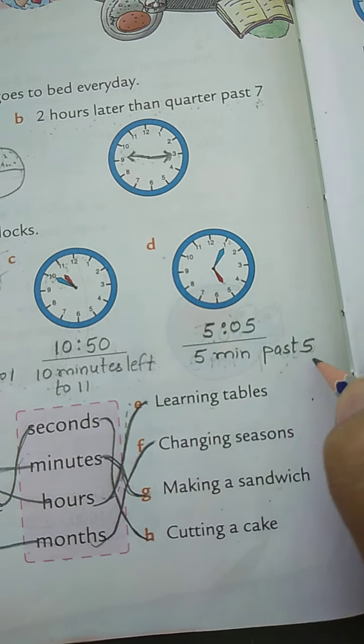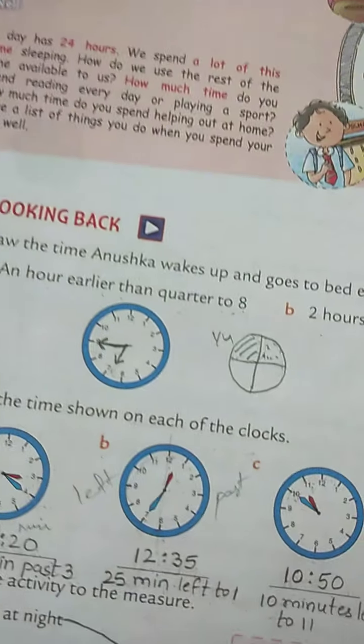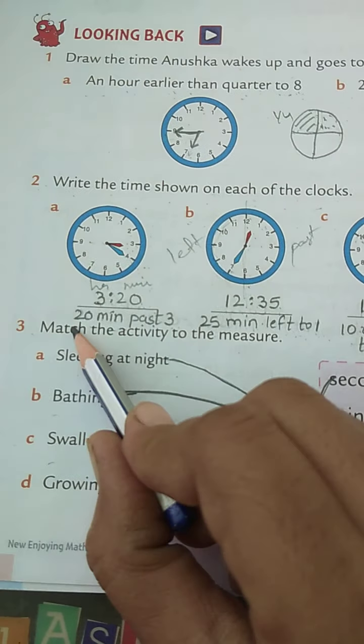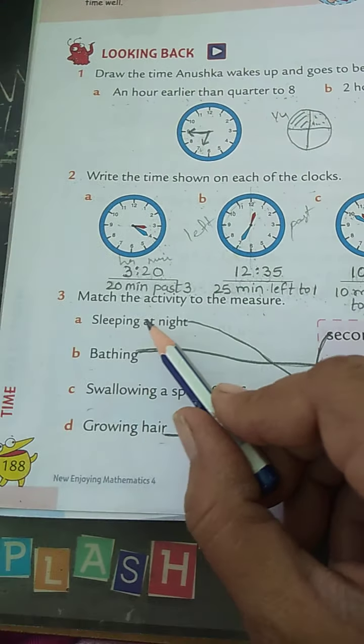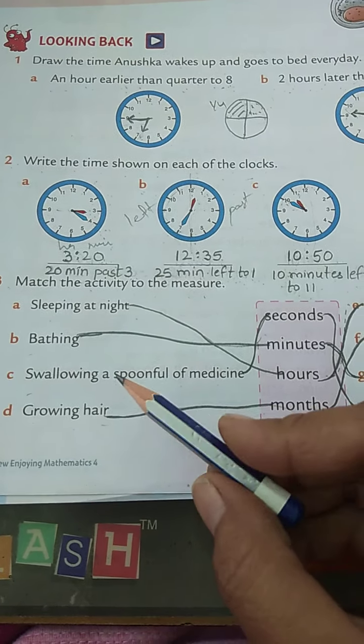Right, now the big hand is between 12 and 6, this side, so past we have to use. So 5 minutes past 5. Now we will go with the next question, that is question number 3: match the activity to the measure.